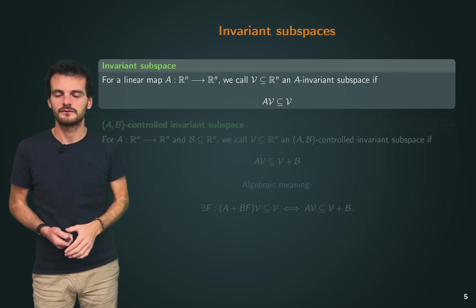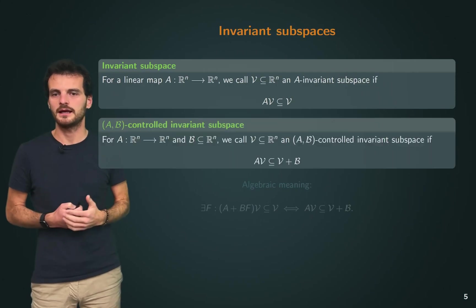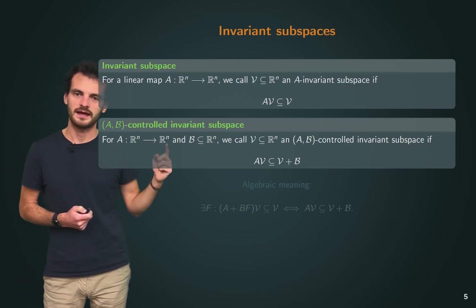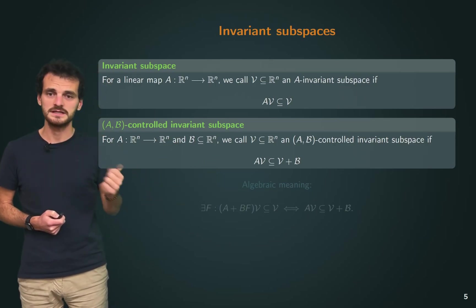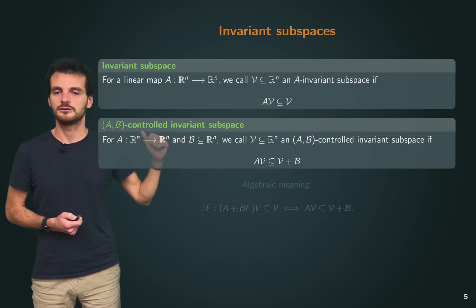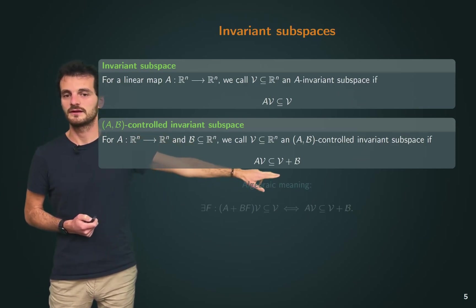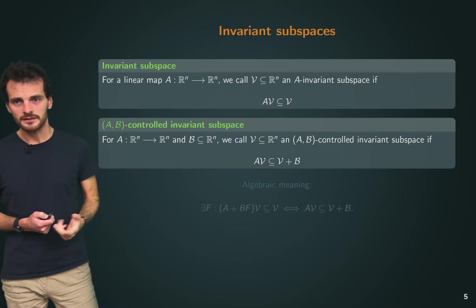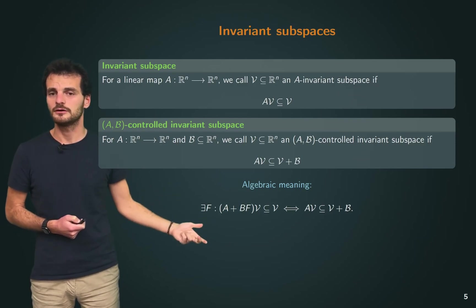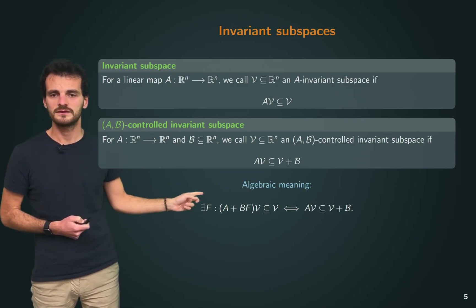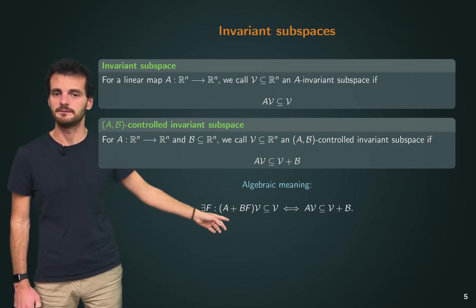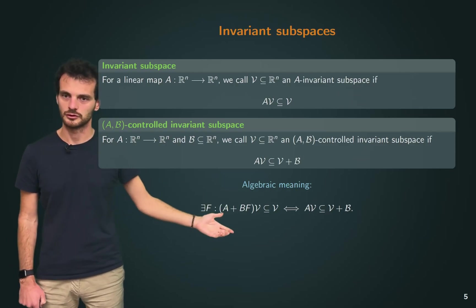Of course, we're dealing with dynamical systems with inputs, so we need to generalize this notion, and we can do that through (A,B)-controlled invariant subspaces, where on top of matrix A, you also have subspace B, which is the image of the input matrix in general. And now V is called an (A,B)-controlled invariant if this subset inclusion holds. This has a very intuitive algebraic meaning, which is that if V is an (A,B)-controlled invariant, then we can always find a feedback of the state F such that V is invariant with respect to A+BF.